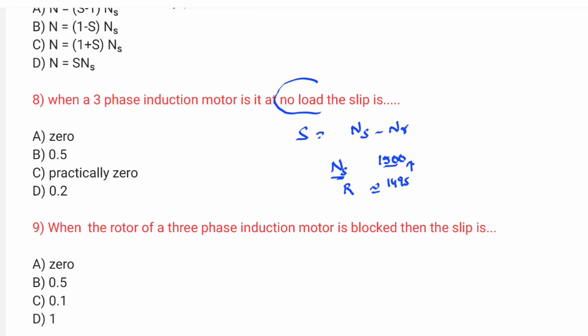Friends, at no load the rotor speed is nearly equal to synchronous speed, so the slip is practically zero. No-load slip is approximately zero.